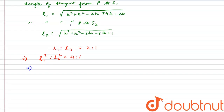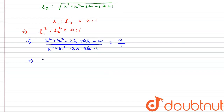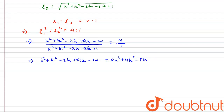Substituting, we have (h² + k² - 2h + 4k - 20) divided by (h² + k² - 2h - 8k + 1) = 4/1. Cross-multiplying gives h² + k² - 2h + 4k - 20 = 4h² + 4k² - 8h - 32k + 4.